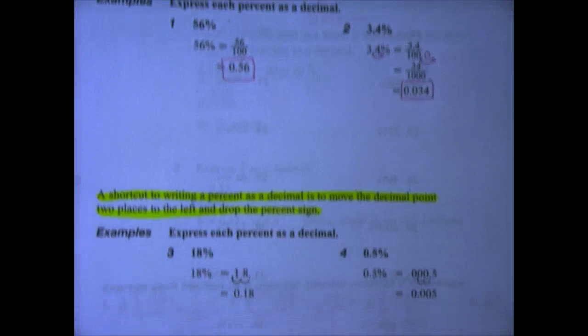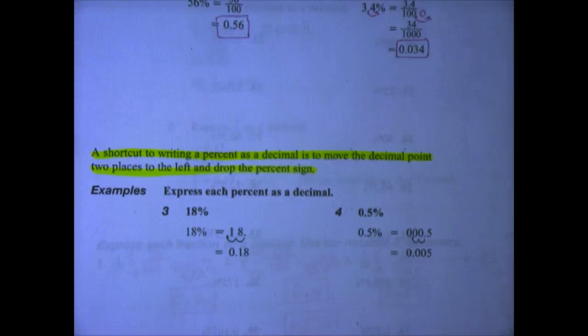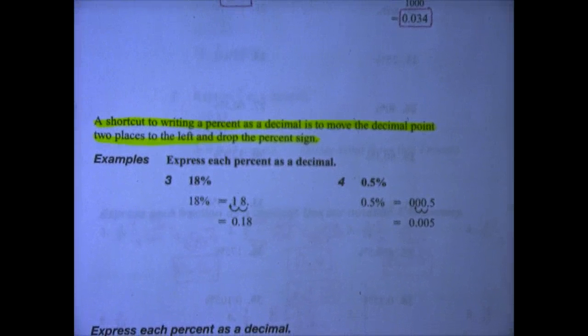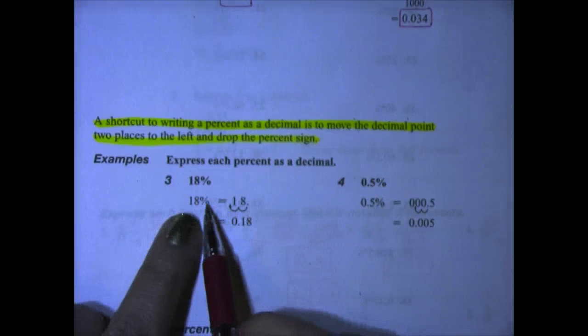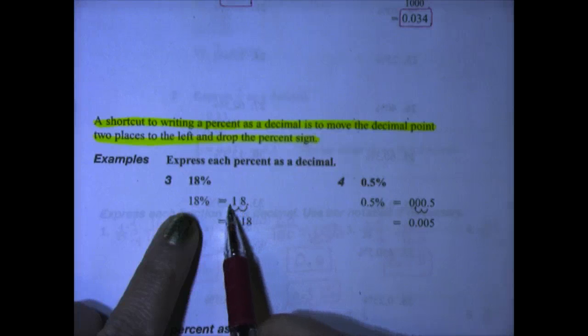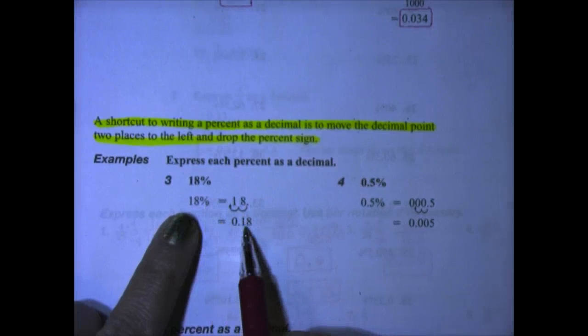It's just as simple as writing a decimal as a percent, except that we need to remember to move our decimal point left instead of right. So here we have 18%, with an assumed decimal after the 8. We're moving it one, two places to the left. Get rid of the percent sign, 0.18 or 18 one-hundredths.